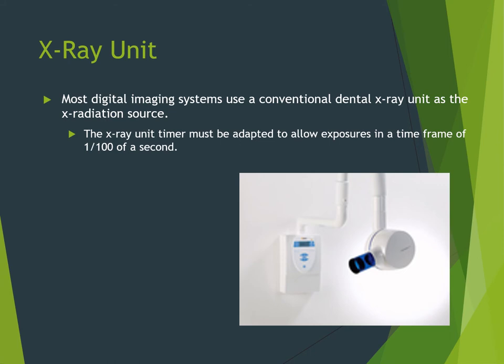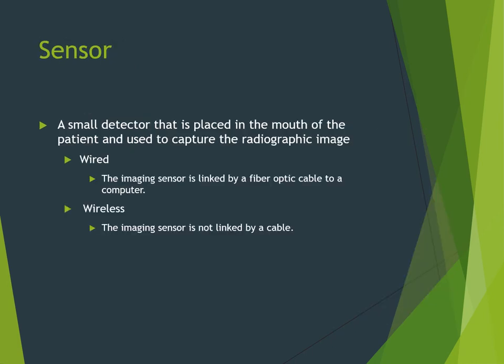Older x-ray units could break down seconds of exposure time into 1/60th of a second — one impulse is 1/60th of a second. For digital radiographs, we need to break down that second into 1/100th of a second. If your unit is older and doesn't have a button to switch to digital, you'll be overexposing your patients because you wouldn't be able to come all the way down to, say, 0.05 of a second. Make sure whatever unit you're using for digital radiography can break down to 1/100th of a second.